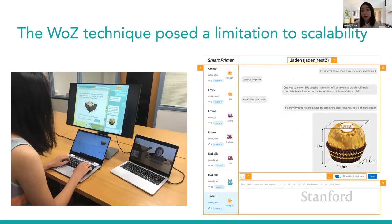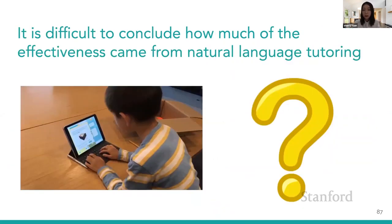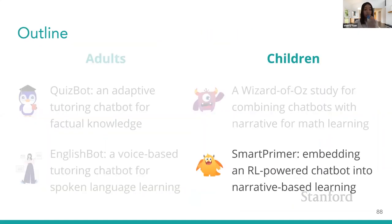Now that I've obtained positive results from the narrative-plus Wizard of Oz chatbot, could we actually build a real automated chatbot? I want to see if I would get similar results with a real chatbot rather than a human wizard. Additionally, in the last study the wizard had real-time access to children's facial expressions and learning behavior, so it was difficult to conclude how much of the effectiveness came from natural language tutoring.